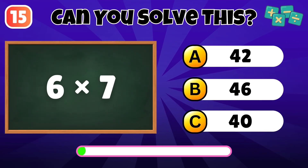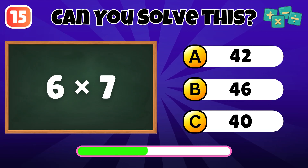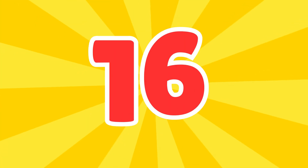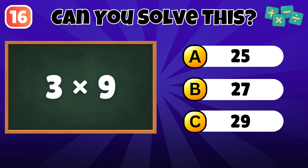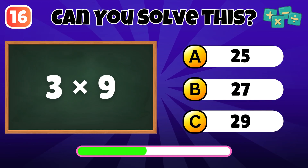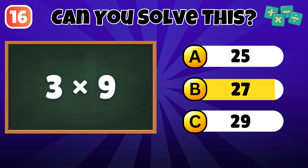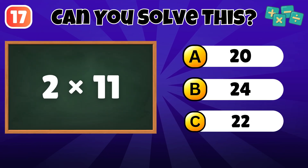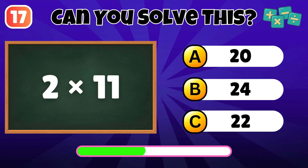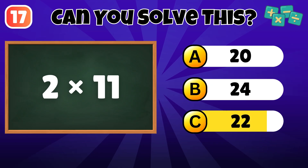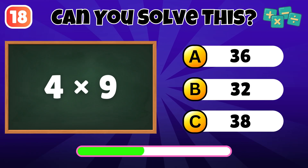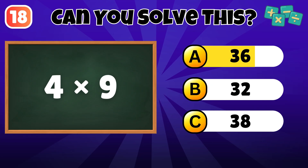What is 6 times 7? The answer is 42. What is 3 times 9? The answer is 27. What is 2 times 11? The answer is 22. What is 4 times 9? The answer is 36.